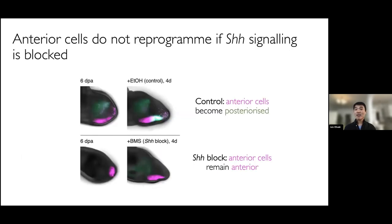In further assays, we demonstrated that this reprogramming ability is dependent on endogenous sonic hedgehog signaling. We repeated the assay either as-is by default, or in the presence of a pharmacological drug called BMS that blocks sonic hedgehog signaling. In the BMS condition, those magenta anterior cells do not reprogram. This suggests that in the transplantation assay, the transplanted anterior cells came into proximity of endogenous posterior sonic hedgehog, and this reprogrammed their identity to become new posterior cells.